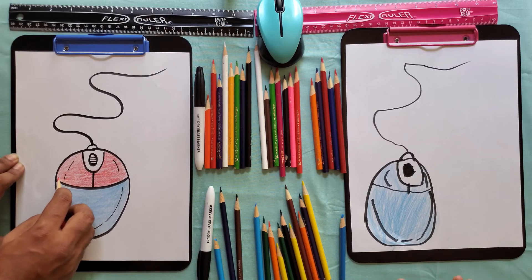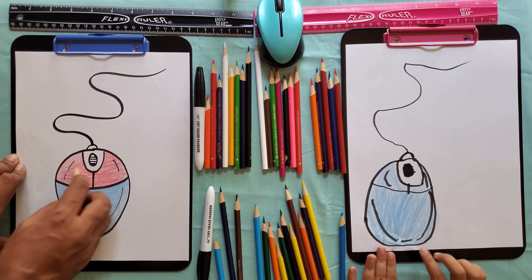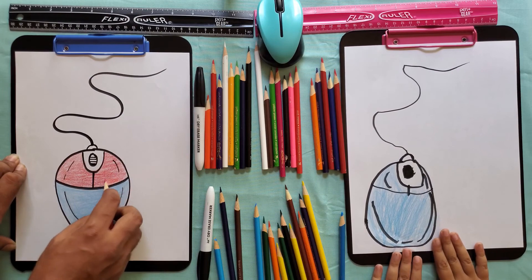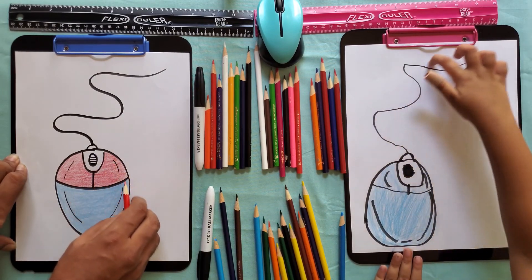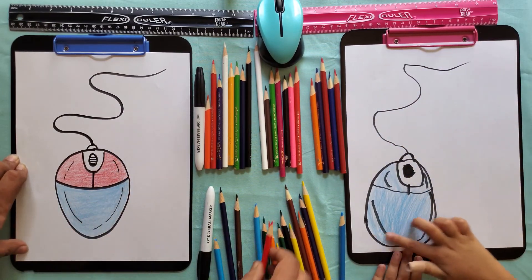Why are they called mouse? But now I know. Because they look like a mouse. This is its tail. This is its head.